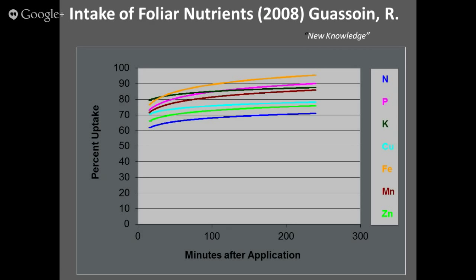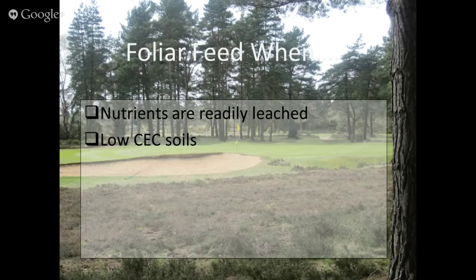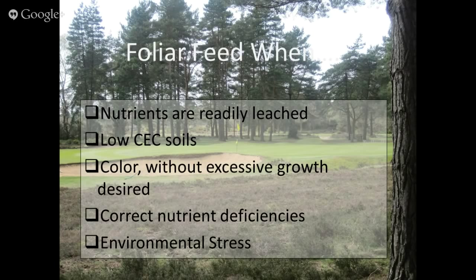When should you foliar feed? Primarily when nutrients are readily leached on high-sand systems that don't hold many nutrients, or where there's a lot of drainage and leaching, like potassium — which is a very leachable nutrient. Also on low-CEC soils when you want to achieve good color without excessive growth, when correcting nutrient deficiencies, and during environmental stress. From a best management standpoint, you want to limit nitrate nitrogen leaching, so look at sources that limit this. Volatilization of urea at higher pH — generally above 7.3 — results in a higher instance of urea volatilizing, so if your irrigation water is alkaline, that could become a problem.